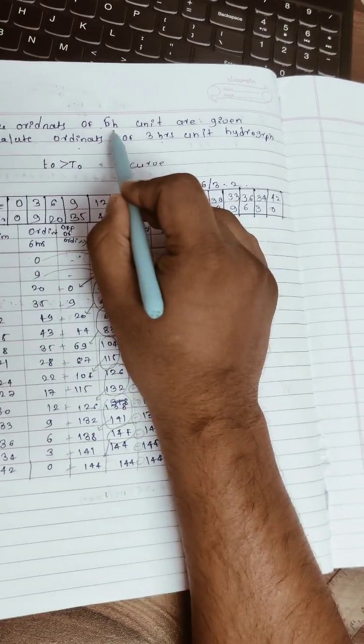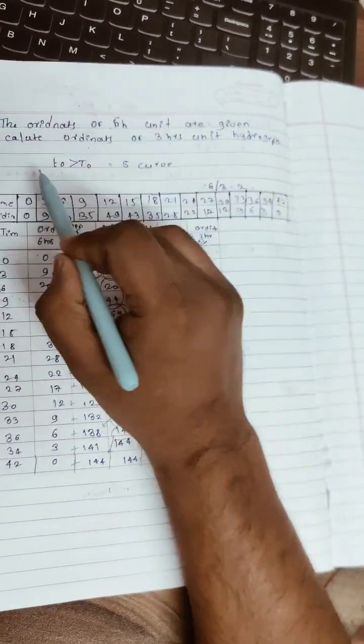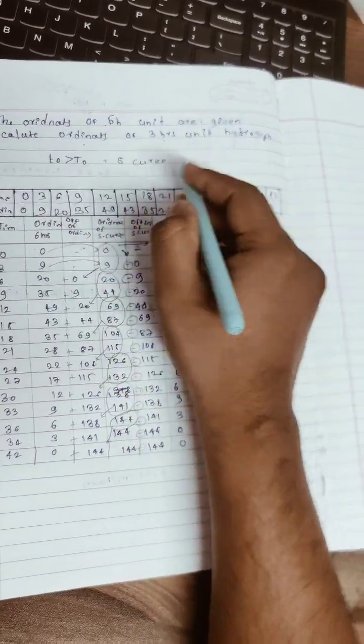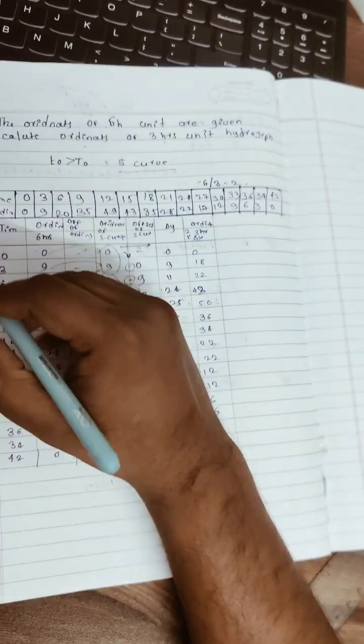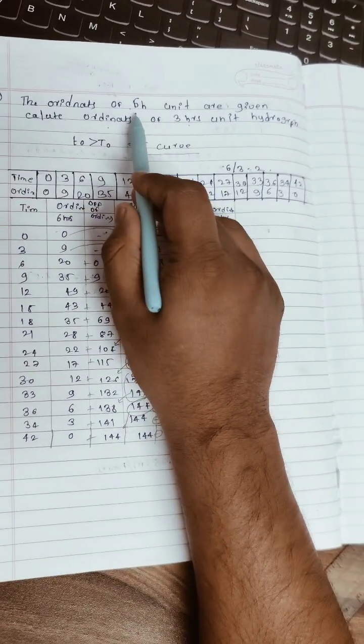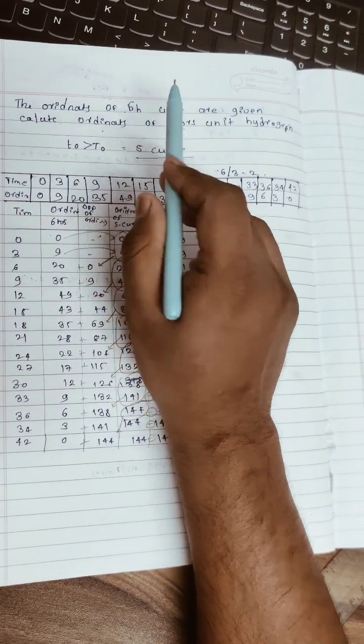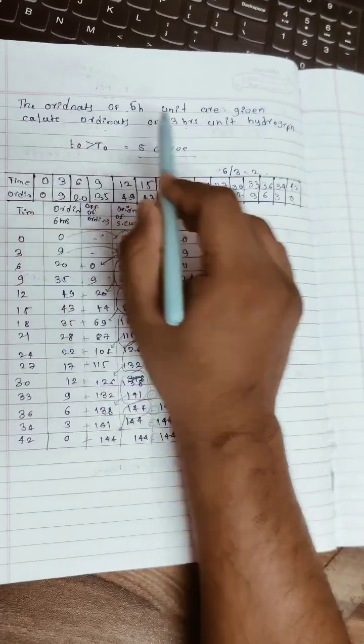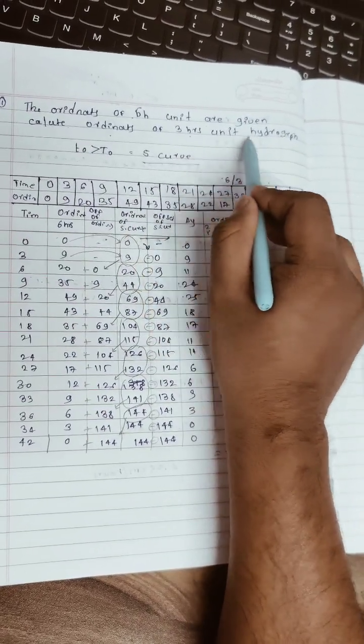Here we have a problem of a six hour unit hydrograph where we need to find this from S-curve method. The ordinates of six hour unit hydrograph are given and we need to find a three hour unit hydrograph.